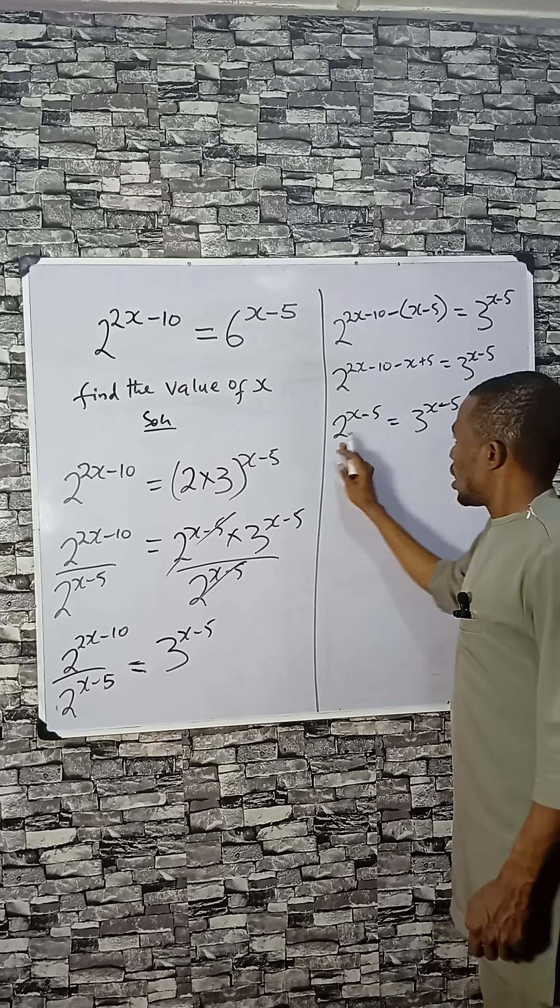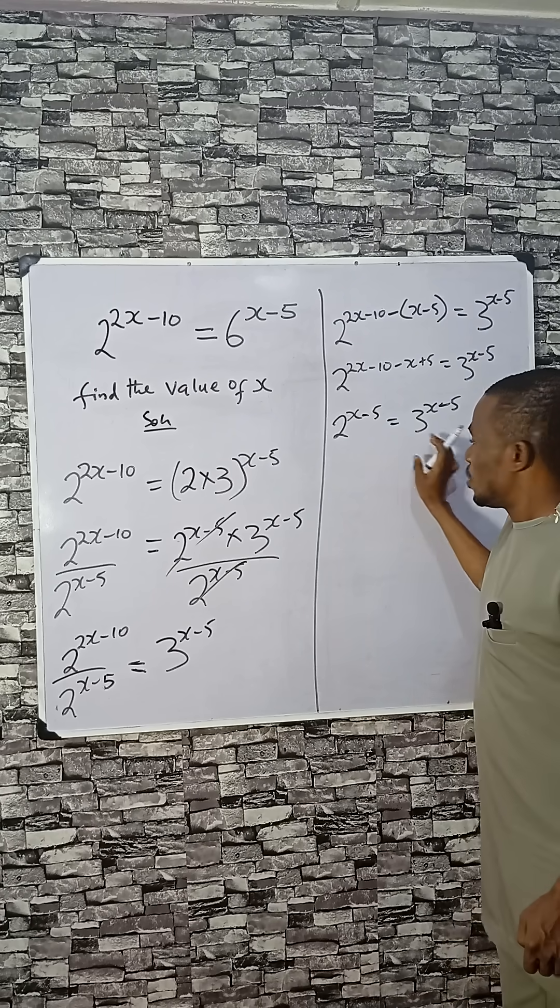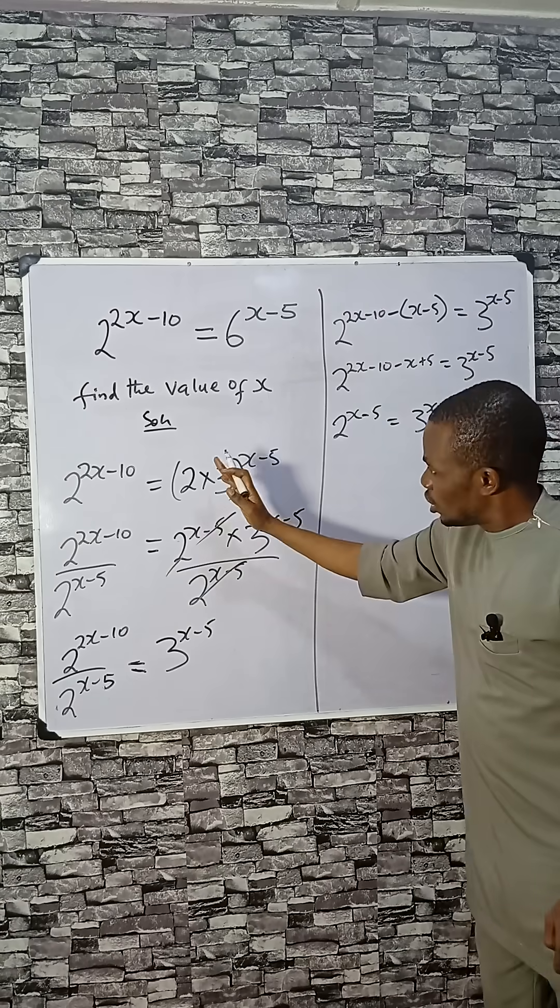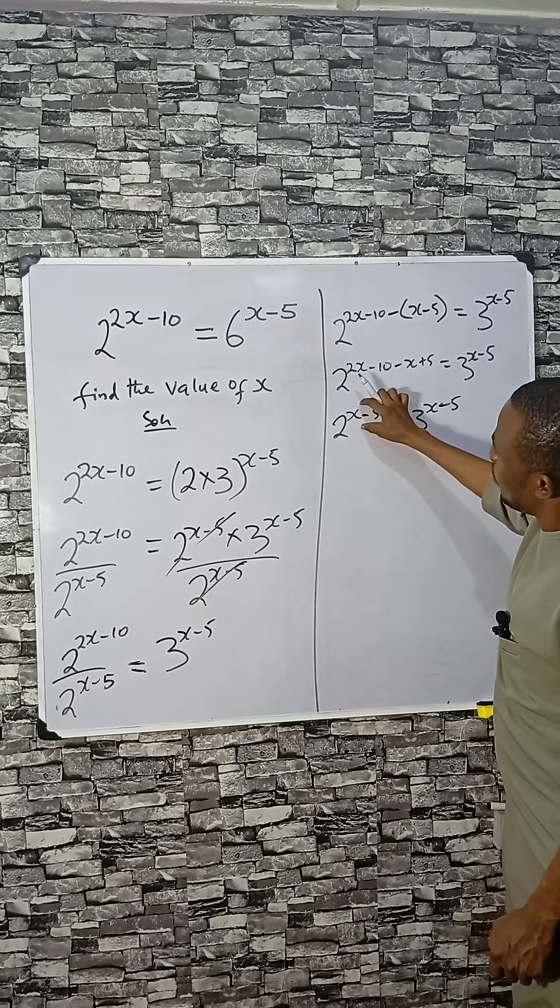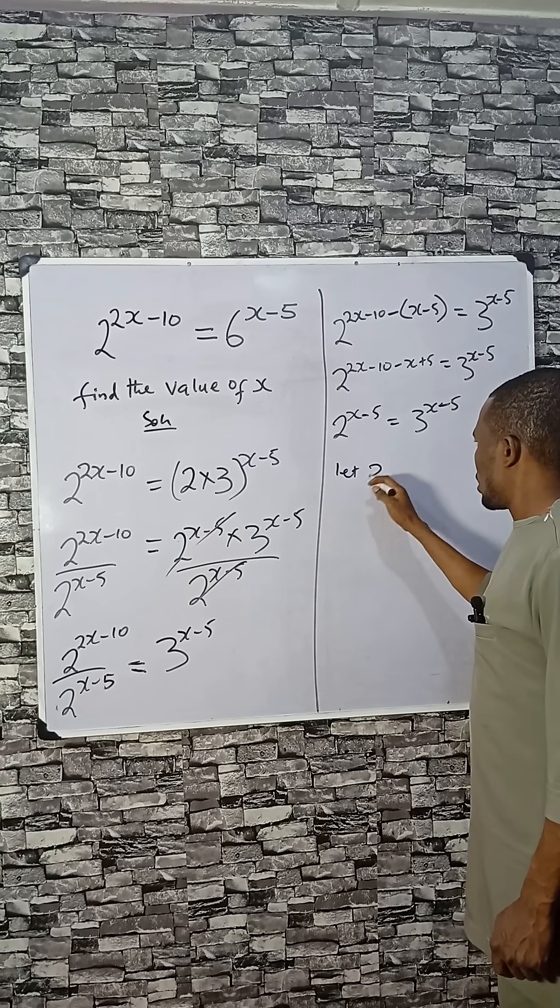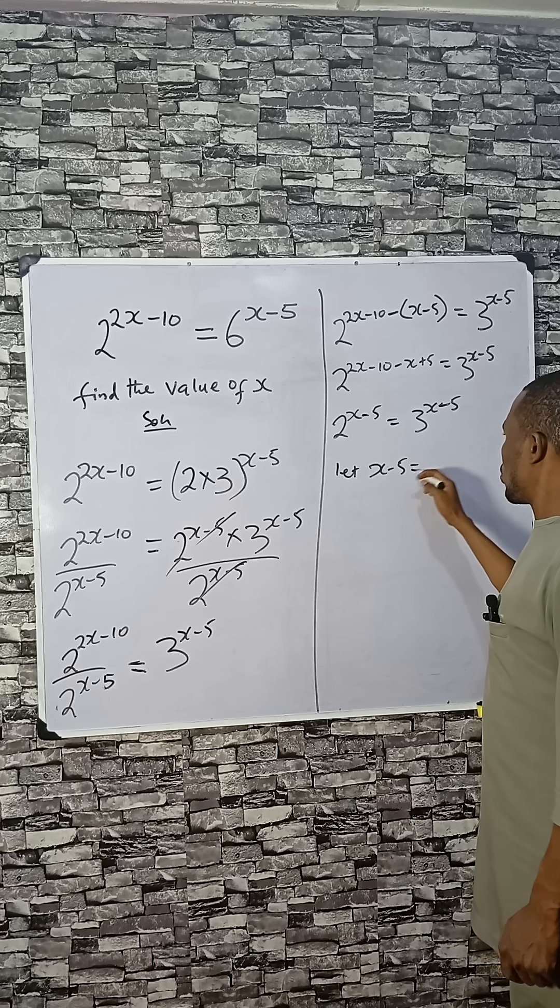Now they have the same power but the bases are different. The only thing that will make this side equal to that side is when the power equals 0. That means if we let x minus 5 equal y...